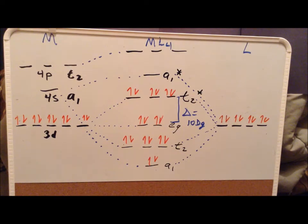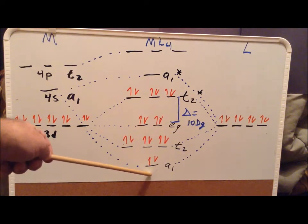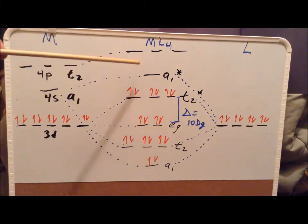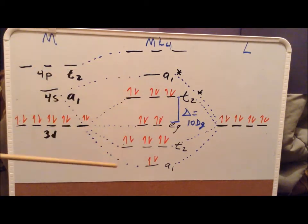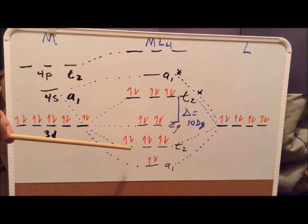The important combinations to see here are we have an A1 bonding combination, A1 antibonding. The other three important bonding orbitals that we derived previously were the T2 combinations. So there's a T2 bonding and a T2 antibonding combination.